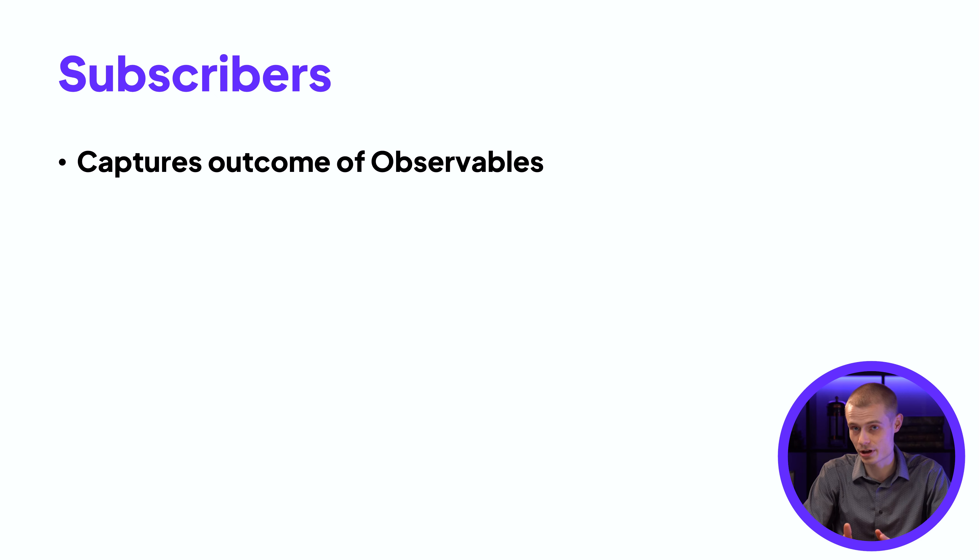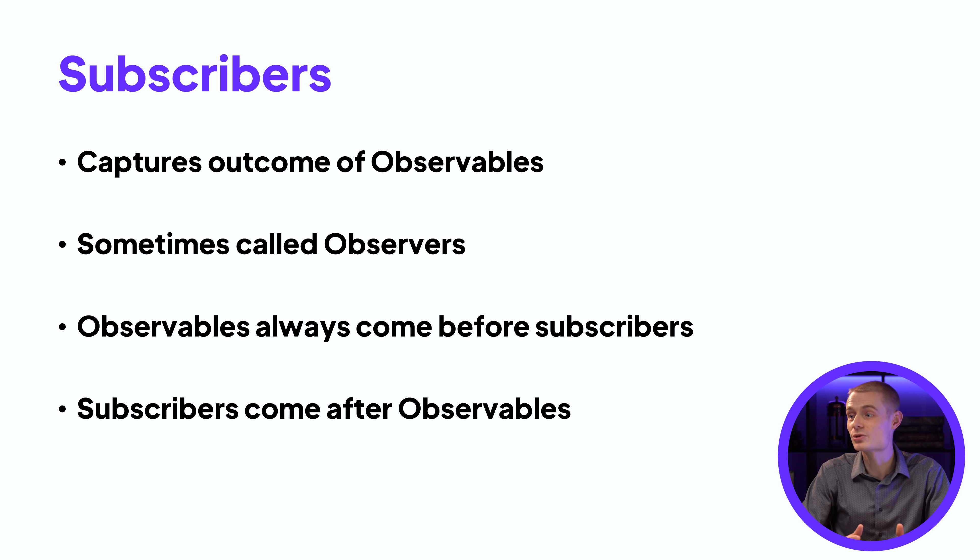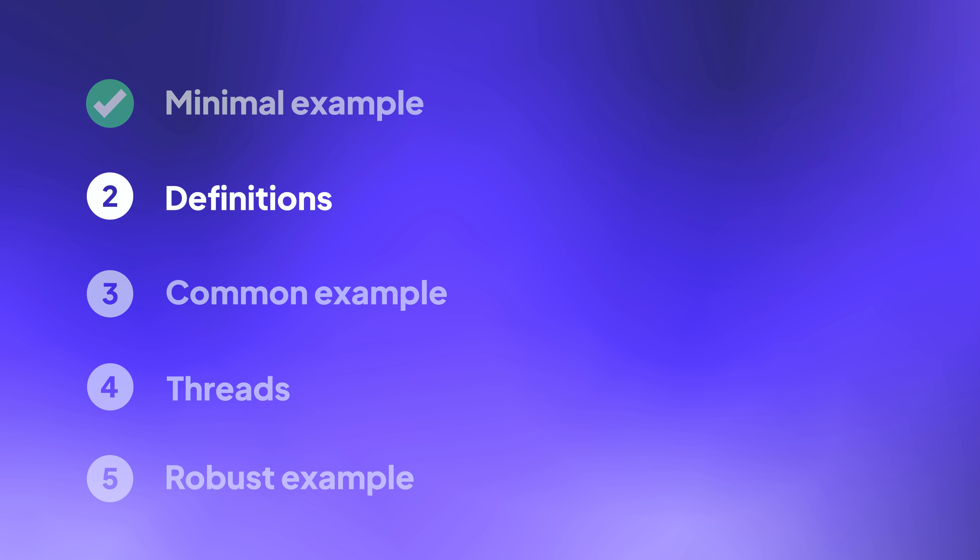Subscribers are anything later on in your code or further down in your code that capture the outcome of an observable that was higher up in the code. So just as a reminder, subscribers are also sometimes called observers. In my opinion, observers are a more direct name, but it is less common, so I'm just going to stick with subscribers for this. Observables also always come before subscribers. You can't have something that you're subscribing on if there's nothing that needs to be observed. Now, hopefully you understand the difference between observables and subscribers, because we're going to be doing this throughout the rest of the course.